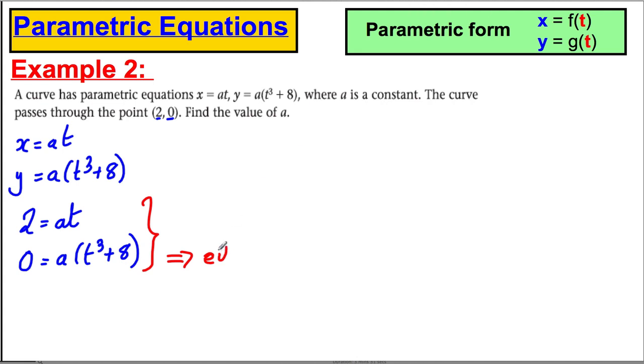Either, well, firstly I could think to myself, perhaps a is 0. Could a be 0 here, two numbers multiplied to give 0. But if a was 0, you could either have a is 0, or you could have that t cubed plus 8 equals 0. So in this case here, t cubed would therefore be negative 8, and t would be negative 2.